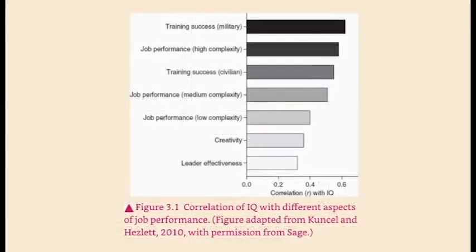Job performance correlations go from minus one to one. So anything from zero and up means that there is a correlation, a correlation of one would be total correlation. Like for example, the correlation between being homo sapiens and being human is one. Training success in the military and IQ have a slightly larger than 0.6 correlation. On the other hand, job performance in medium complexity jobs correlates with IQ at about 0.5. Creativity correlates with IQ below 0.4 and leader effectiveness correlates with IQ at roughly 0.3.